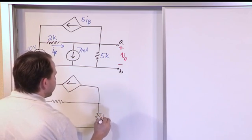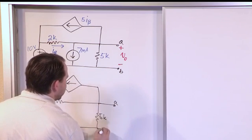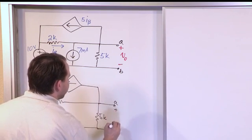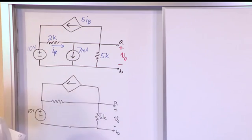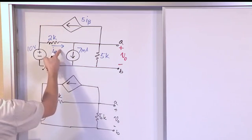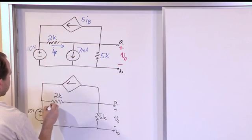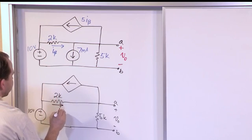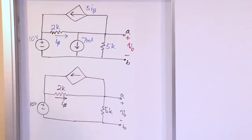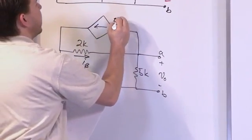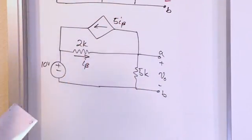So this is 5k and this is terminal A and B and this is V0. Now this is 2k and the current I sub B or I beta really is what it is, is going this way. So everything is drawn exactly the same way. The value of the source is 5 times I beta. Everything is the same. We just take the current source away by open circuiting it, which is the valid way to take constant current sources out.